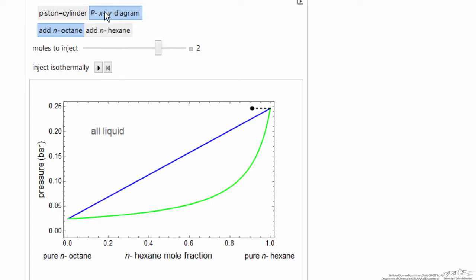So hopefully, by looking at different conditions, it would better help us understand this PXY diagram, in this case drawn for Raoult's law.